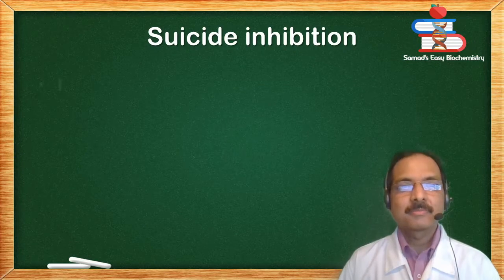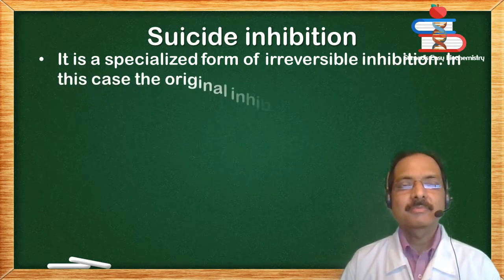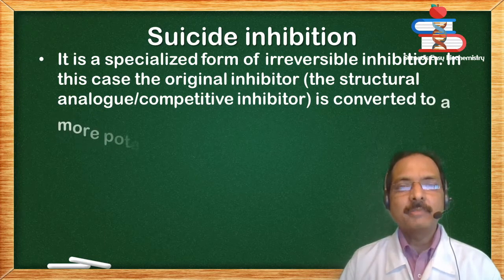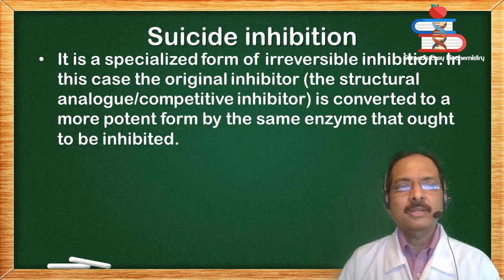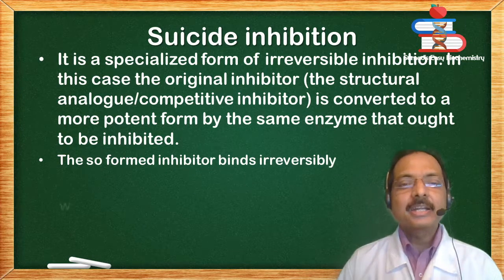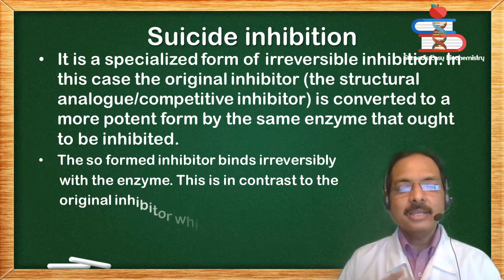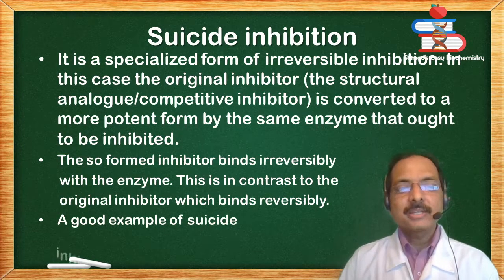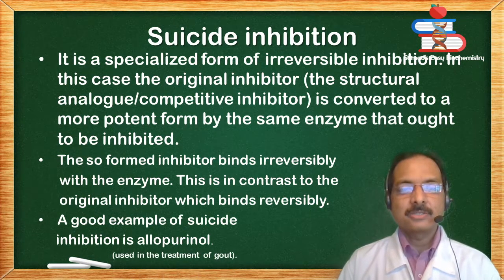Suicide inhibition: it is a specialized form of irreversible inhibition. In this case, the original inhibitor — the structural analog or competitive inhibitor — is converted to a more potent form by the same enzyme that it ought to inhibit. The so-formed inhibitor binds irreversibly with the enzyme, in contrast to the original inhibitor which binds reversibly. A good example is allopurinol, which inhibits xanthine oxidase and is used in the treatment of gout.